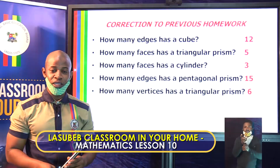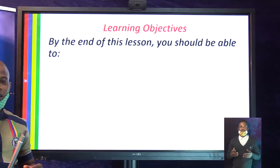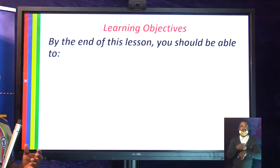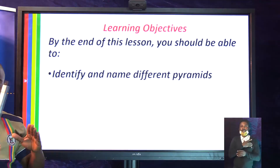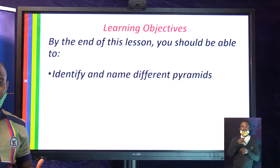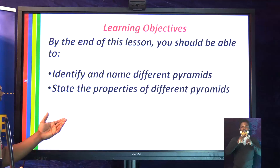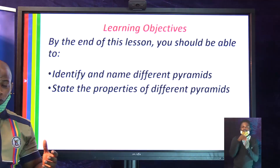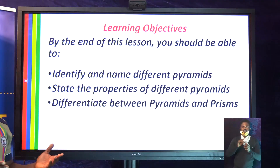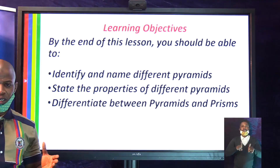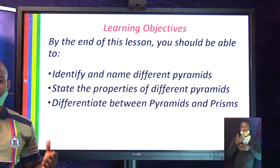I believe you got all this right and for that you deserve a cheer. Looking at the lesson objectives for today, by the end of our lesson you should be able to identify and name different types of pyramids, state their properties, and differentiate between a pyramid and a prism based on their physical appearance and properties.